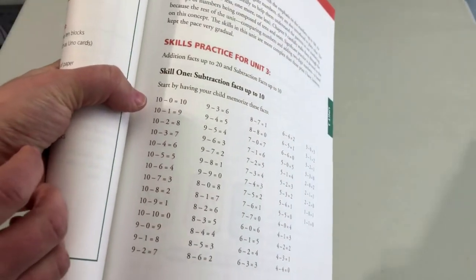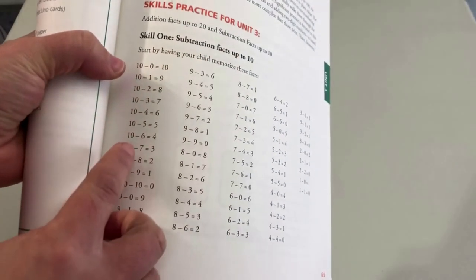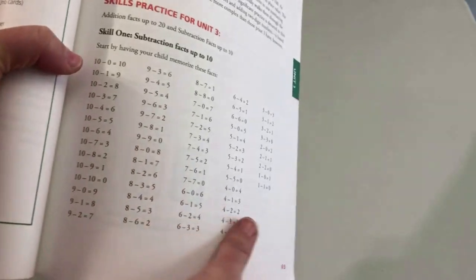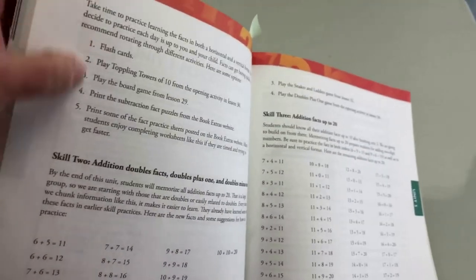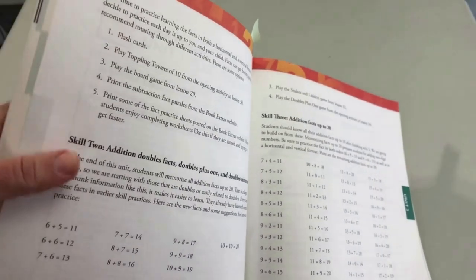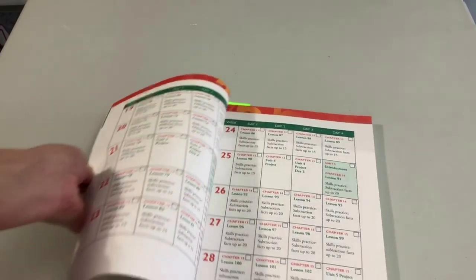And I've laid out exactly how to practice it for you in the teaching guide. For instance, in unit three, one of the fact groups you're practicing are subtraction facts up to 10. I tell you what the facts are, and then I give you several ways to practice it. This top part right here are the ideas on how to practice it. It's up to you to tailor it to your family, but spacing it out like that really leads to long-term retention.